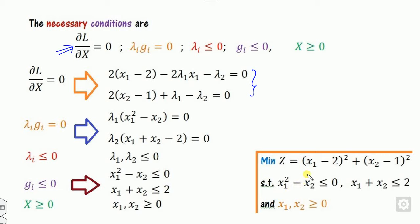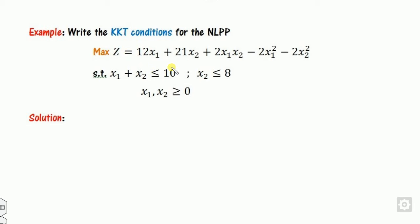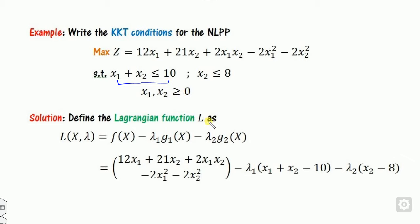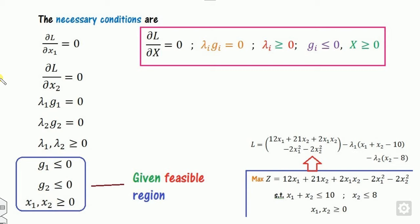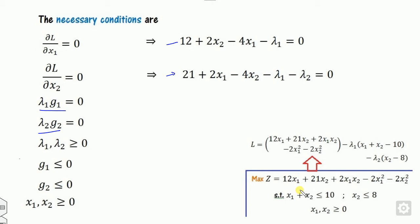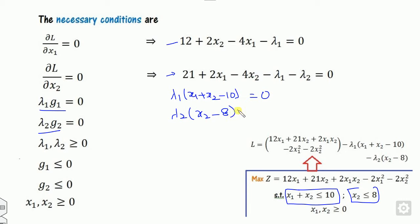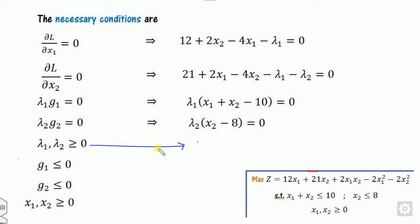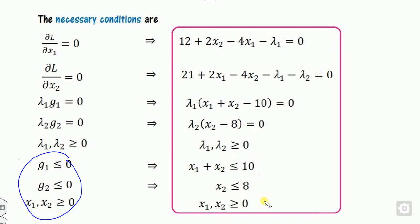Look at one more example — how to write the KKT conditions. First write L: this is x1 plus x2 minus 10 and x2 minus 8. Since the problem is maximization, the only difference is lambda i is greater than or equal to zero. The partial derivatives with respect to x1 and x2 are written. Lambda 1 times (x1 plus x2 minus 10) equals zero, and lambda 2 times (x2 minus 8) equals zero. The feasibility conditions correspond to the given constraints. These are the necessary conditions.